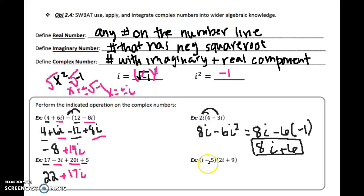All right, and our last example is another set of distribution, but this time we got to foil it. So i times 2i is going to give us 2i squared. i times 9 gives us 9i. Negative 5 times 2i gives us negative 10i. And then negative 5 times 9 is going to give us negative 45. And just like we've been doing before, we need to make sure that we combine like terms.